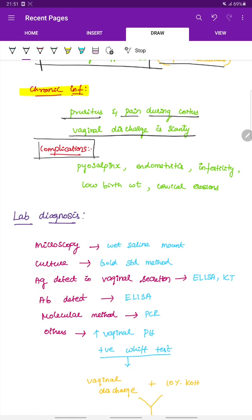Complications include pyosalpinx, pus in the fallopian tube, endometritis, inflammation of the endometrium, infertility, low birth weight and cervical erosions.